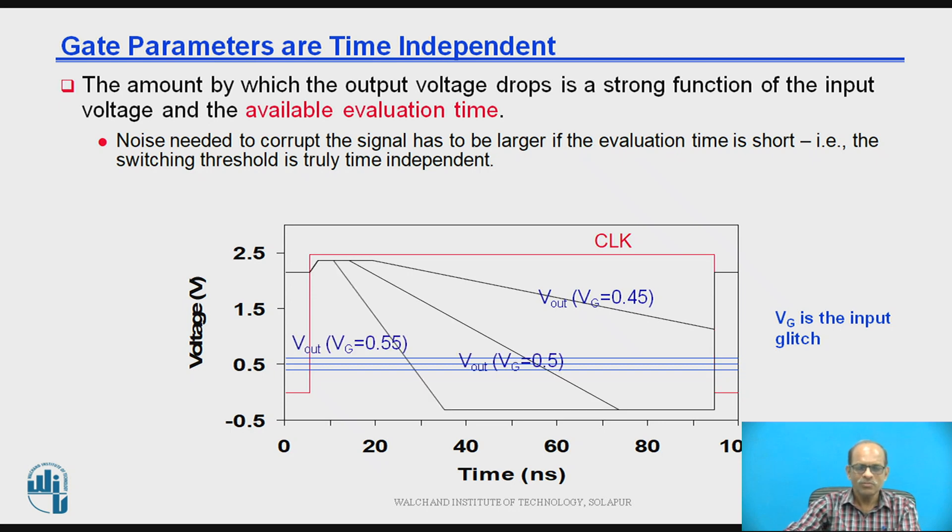Now these waveforms are shown for the different values of the VG, so VG is the input glitch. Now as we change the input glitch, so this voltage V, how V out is changing, so that is shown.